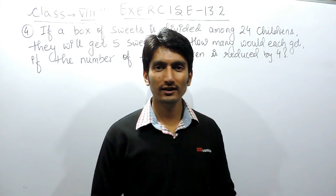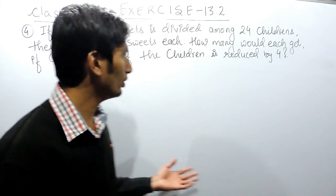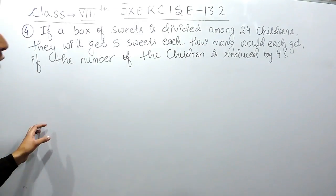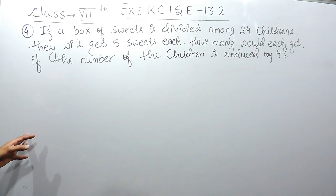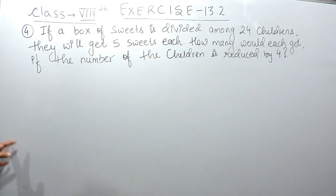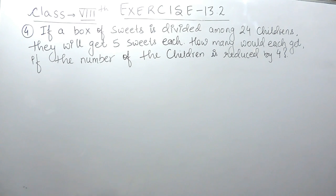Hello everyone. In this video we are going to solve question number 4 of exercise 13.2. The question says: if a box of sweets is divided among 24 children, they will get 5 sweets each. How many would each get if the number of children is reduced by 4?